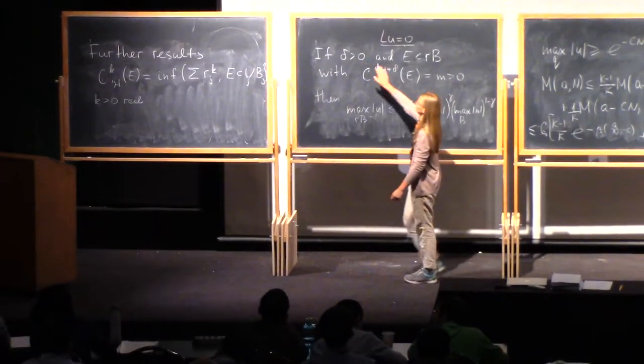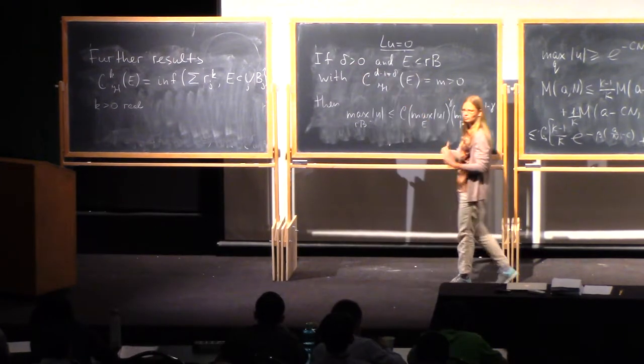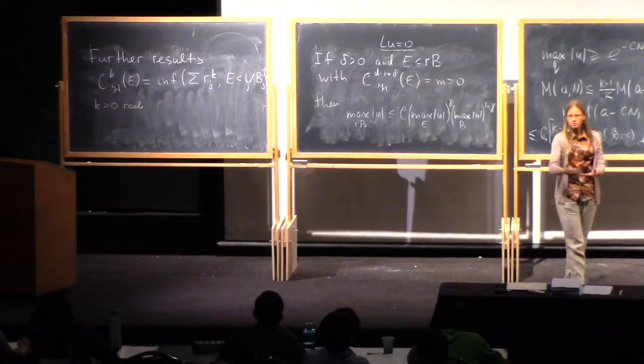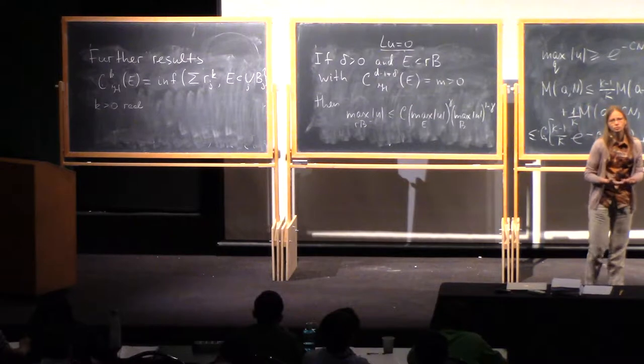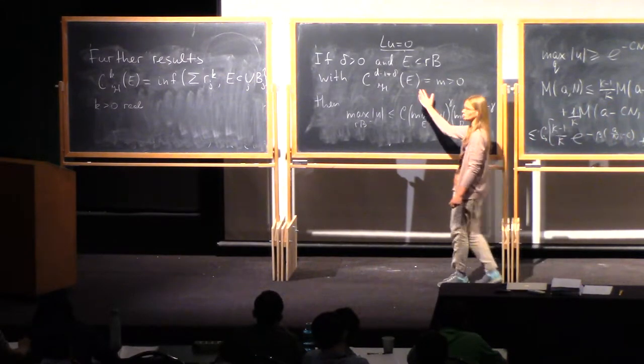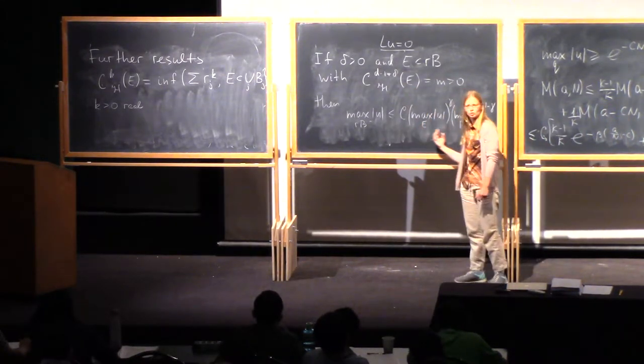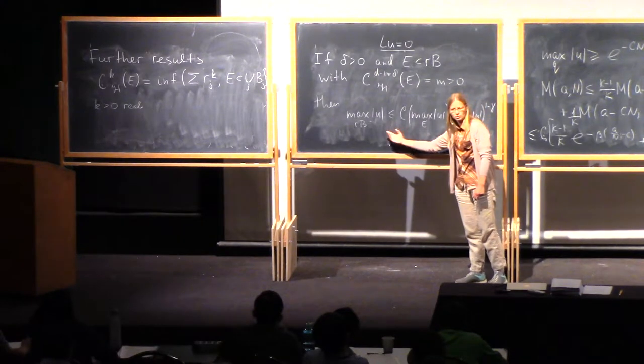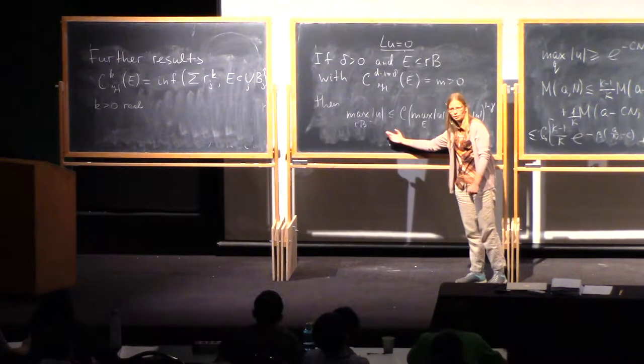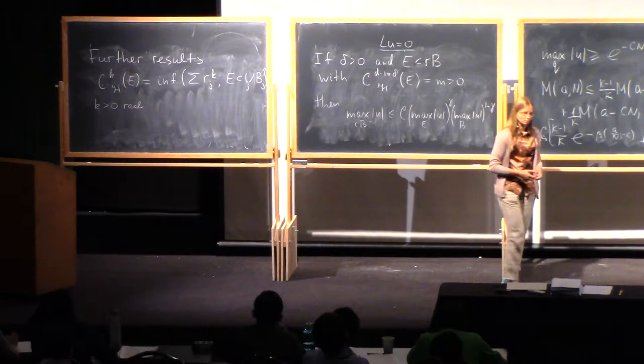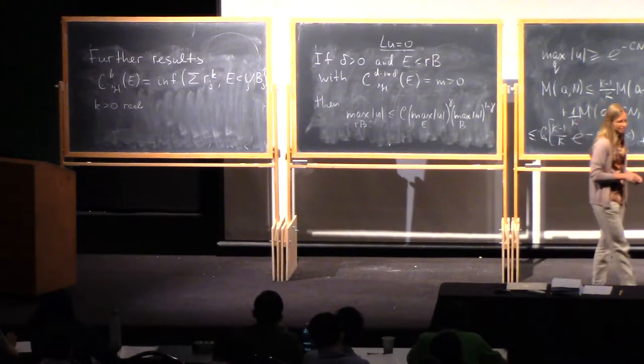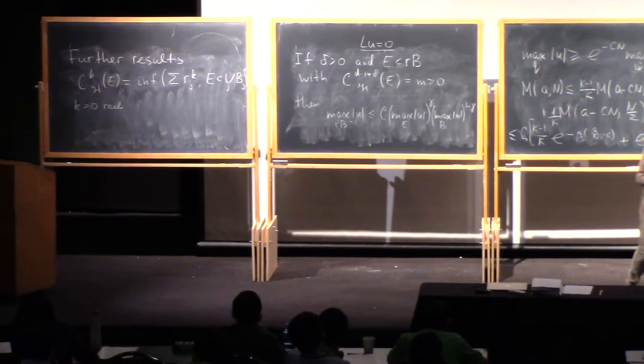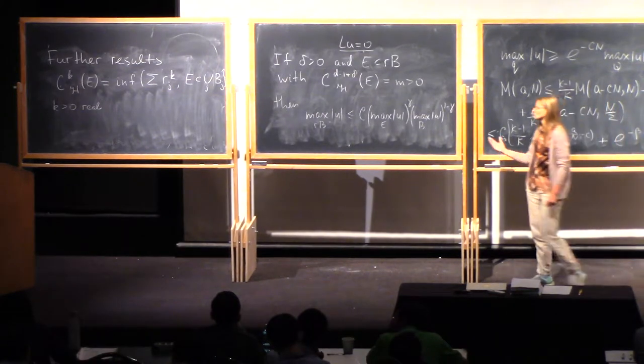Delta positive is very natural threshold. If you think about d minus 1 dimensional set, it could be a zero set of your function and there is no way you get an equality like that. The zero sets are of dimension d minus 1. But if you control your function on a set that has dimension larger than d minus 1, you can extend smallness in this way.